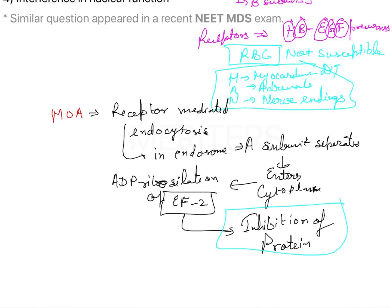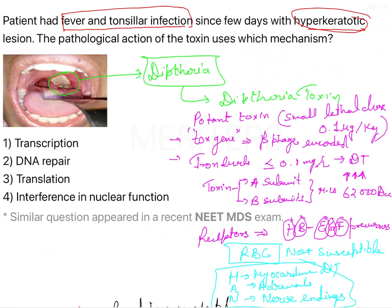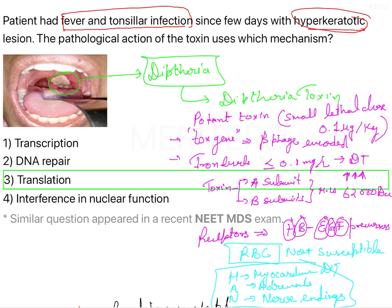The process being inhibited is translation — the formation of protein from ribosomes. The diphtheria toxin inhibits protein synthesis by inhibiting translation. Therefore, the answer to the question is option 3: inhibition of translation.